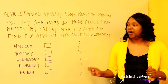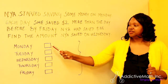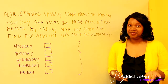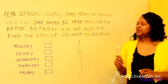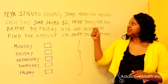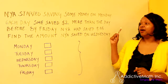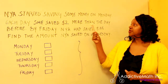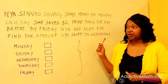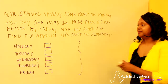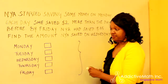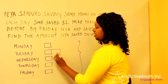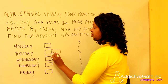So as you know with bar modeling, you always want to start with equal bars because that will help you in the long run. Let's read the first sentence: Naya started saving some money on Monday. Each day she saved $2 more than the day before. So let's draw that out. She started with an unknown amount on Monday. Each day after that, she saved $2 more than she did before.